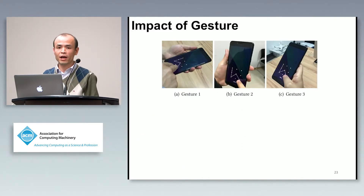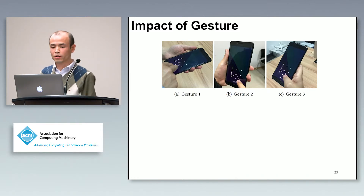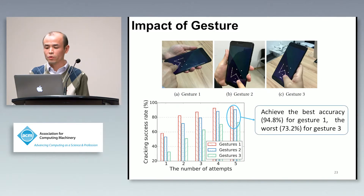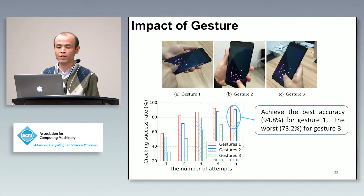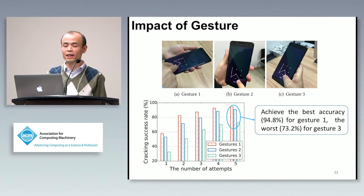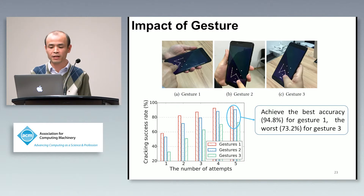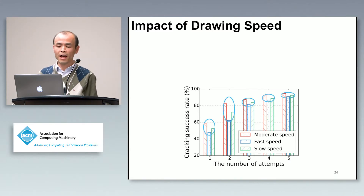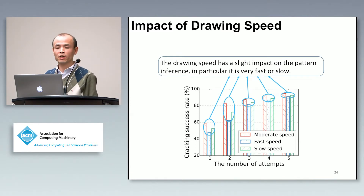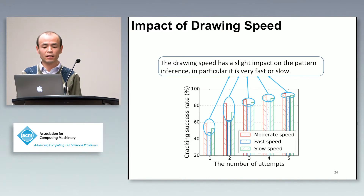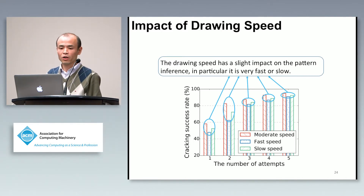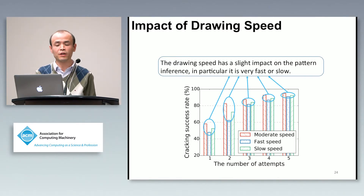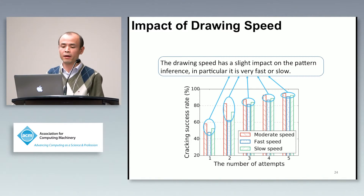We also measure the impact of gestures. Users have three gestures to input their patterns. We observe that gesture one achieves the best accuracy and gesture three the worst. The reason is that with gesture one, we can capture one more signal to analyze to recover the pattern. We also evaluate the impact of drawing speed, and found that drawing speed does have a slight impact on accuracy, but it is bound by only 5%.